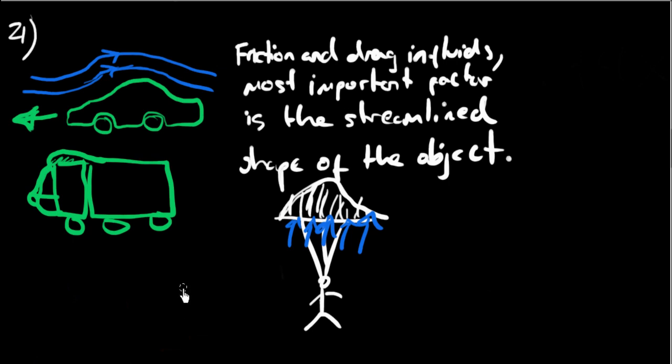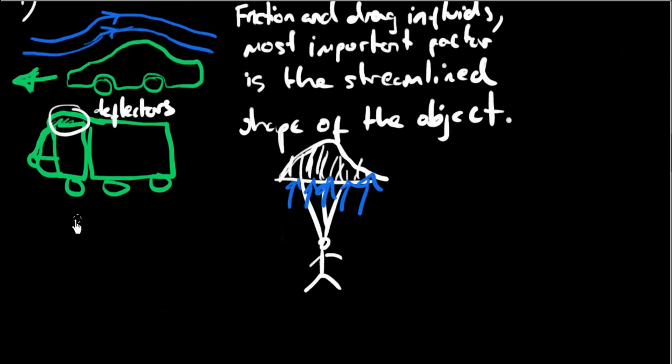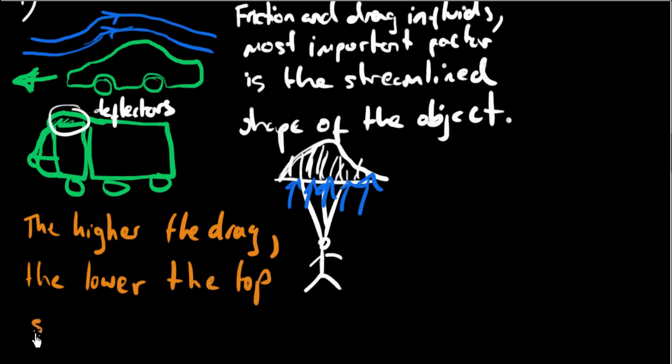And what else? So these things are called deflectors really, they deflect the air sideways. These curved things that you have in the top of lorries, things like that, they are often called deflectors. And we can also mention about drag and friction that the higher the drag, the lower the top speed of the object will be.